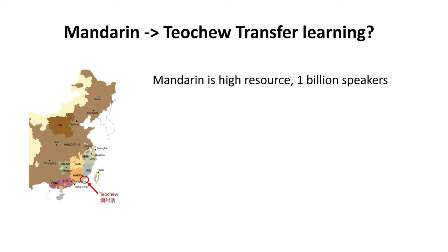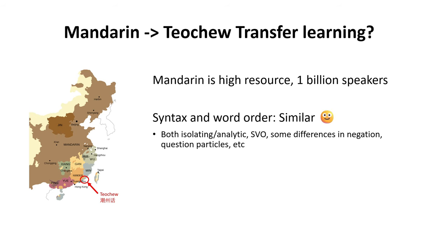This is not supposed to be a linguistics video, so I'm only going to go over at a very high level the linguistic similarities and differences between these two languages. First, the syntax and word order is similar. Both of these languages are isolating and analytic with very little morphology. They have the SVO word order. And in many cases, the word order for two sentences will be identical in these two languages.